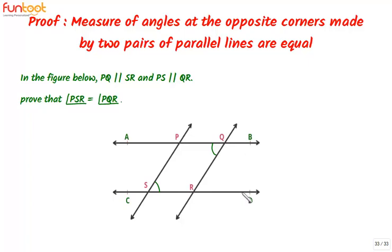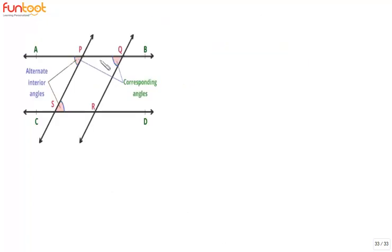Let's now discuss the approach for proving this. Angle APS and angle PSR are alternate angles, so these two angles are equal.